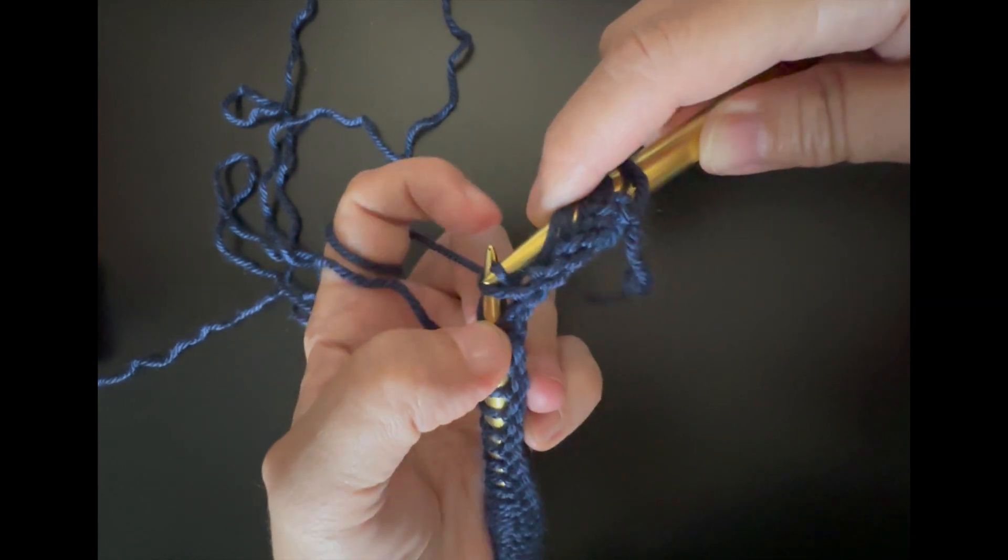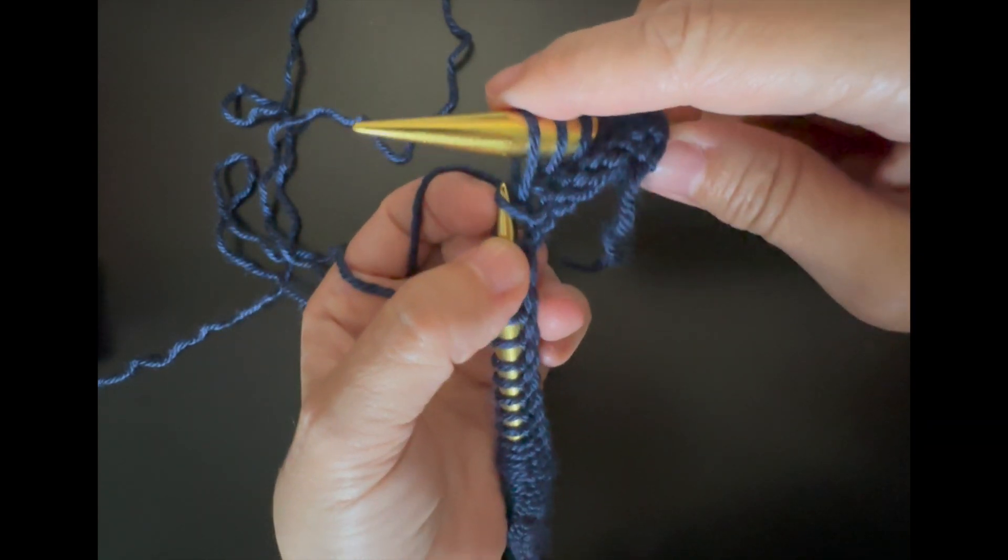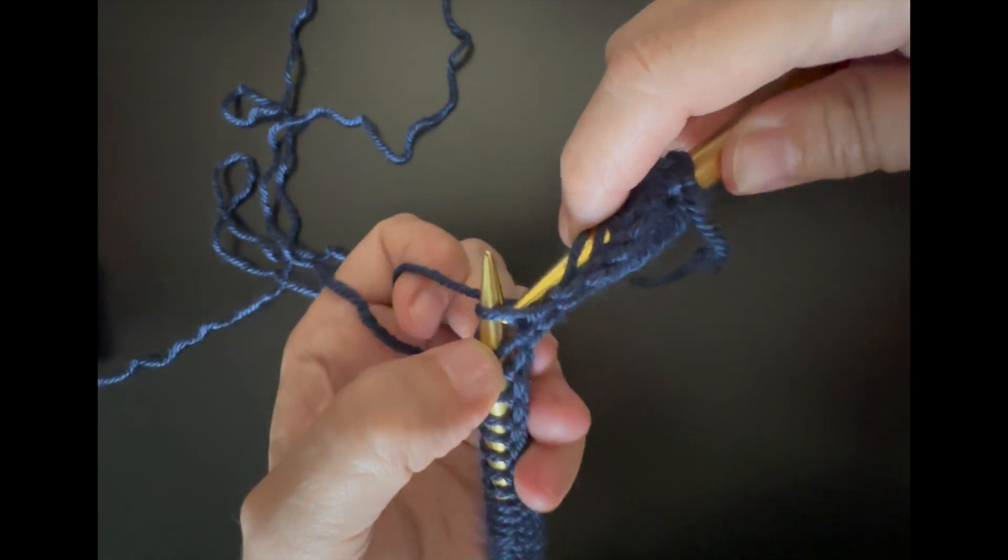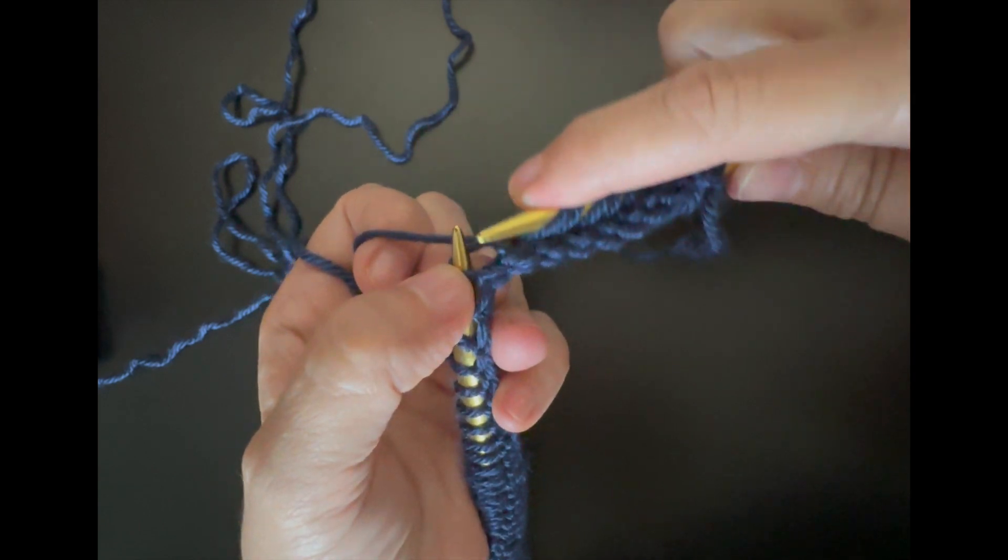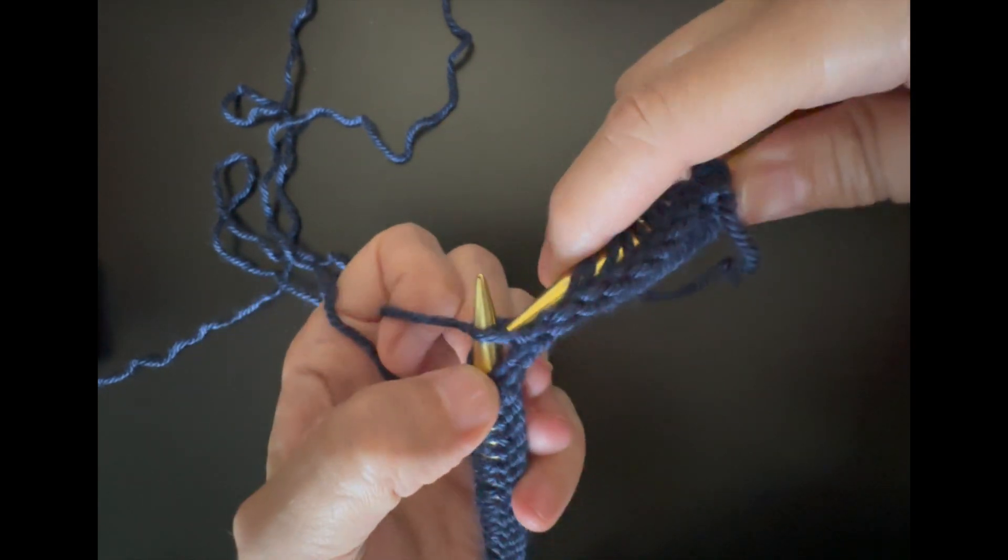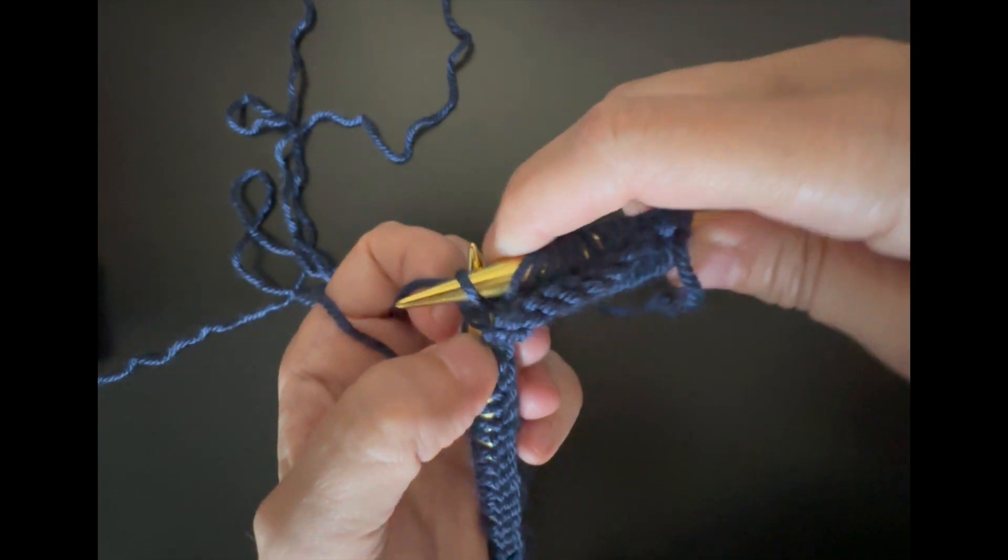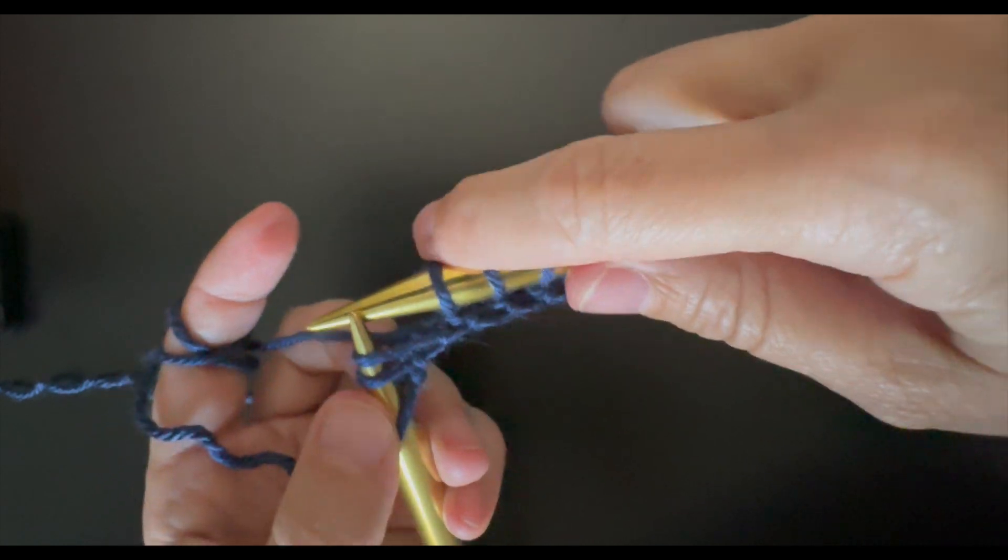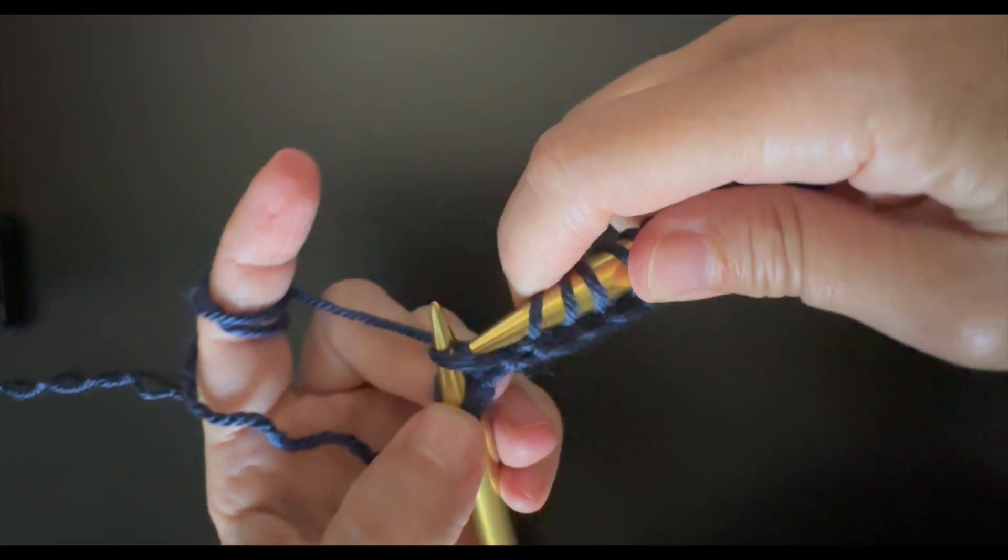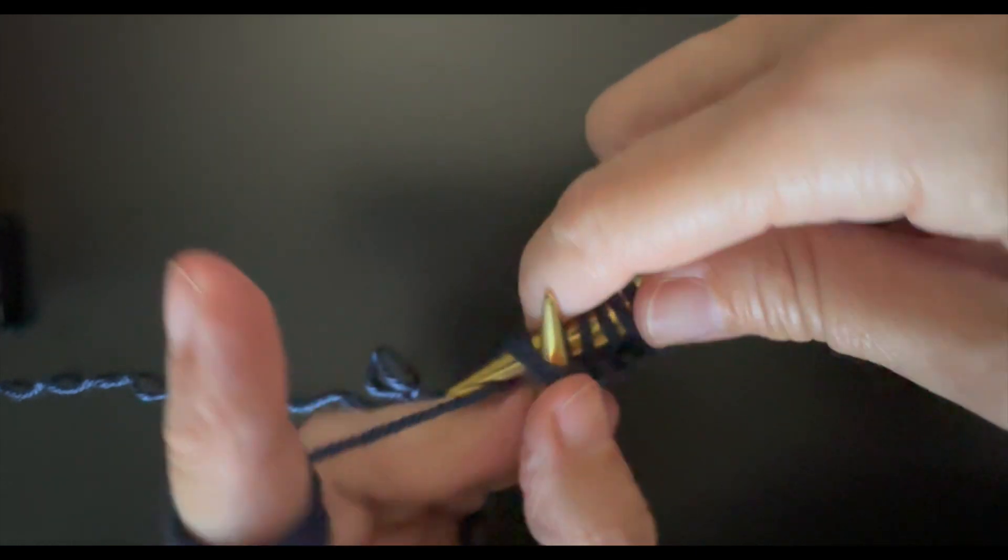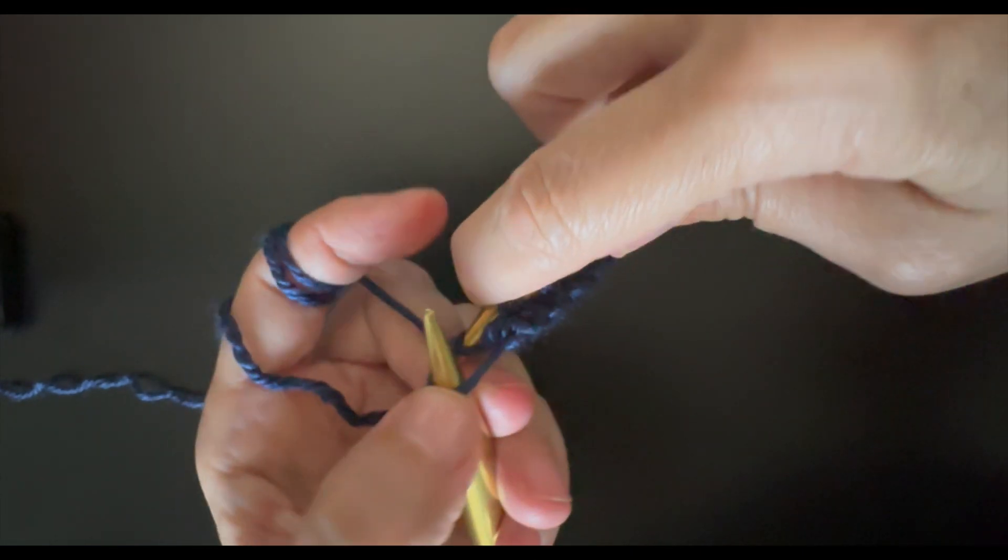Another video detailing in a better way how to do the spike stitch is right here at the top, and I'm leaving it also at the bottom of the description box. So it's a short video and you can understand better this type of stitch, the spike stitch, and it will be very easy to make. Now I'm getting to the end of this row, and I have one more loop and I will just be knitting it.